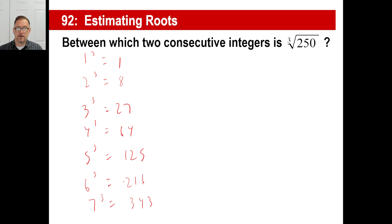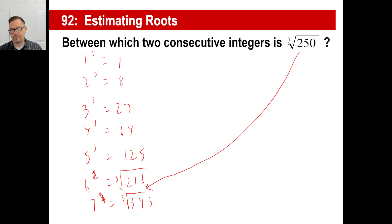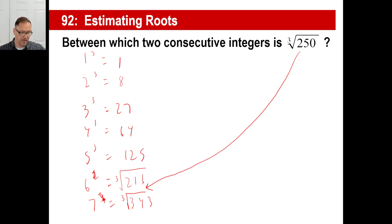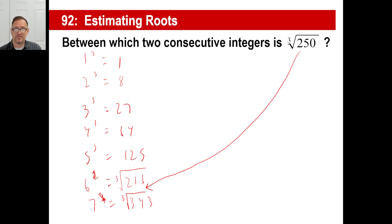250 sits between 216 and 343. The cube root of 216 is 6 and the cube root of 343 is 7, so the cube root of 250 is between 6 and 7. It's going to be closer to 6 because 250 is closer to 216 than it is to 343. You can check with a calculator — or Siri accidentally confirmed: the cube root of 250 is approximately 6.2996.